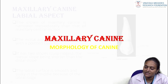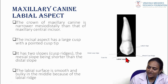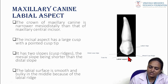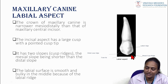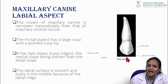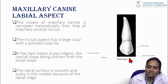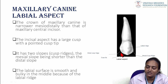Coming to the morphology of canine in detail. From the labial aspect, the crown of the maxillary canine is narrower mesiodistally than that of the maxillary central incisors. It has a large cusp with a pointed cusp tip and two slopes — mesial and distal. The mesial slope is shorter than the distal slope; the mesial cusp ridge is shorter and the distal cusp ridge is longer. The labial surface is smooth and bulky in the middle because of the labial ridge.